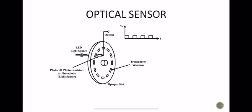In this device, an opaque disk — a disk with perforations or transparent windows at regular intervals — is mounted on the shaft whose speed is to be measured. A light source and a photo sensor are also used in this arrangement.